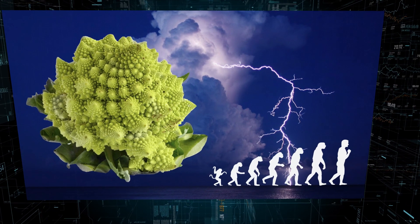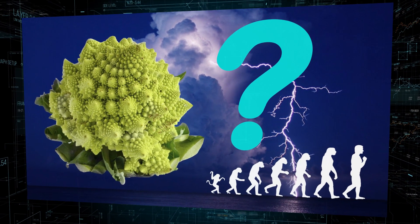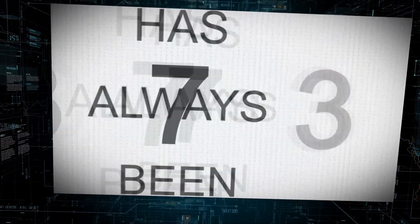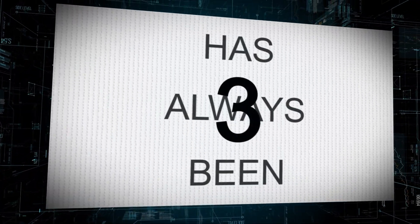If the universe was formed by chance, why would nature follow mathematical rules? After all, the number 7 couldn't have evolved from number 3. 7 has always been 7, and 3 has always been 3.